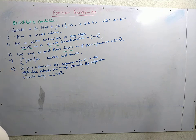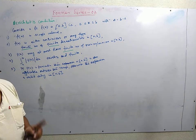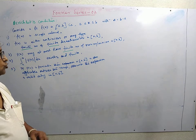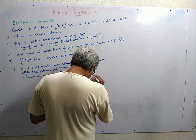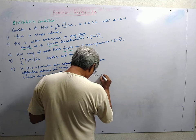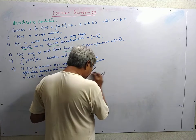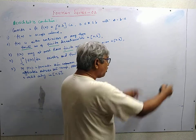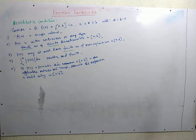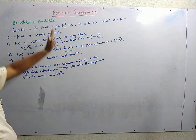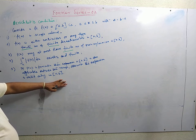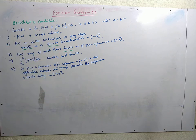Strictly speaking, periodicity is not included in Dirichlet's condition. The point is that if we have a periodic function and expand it in the interval a to b, then it can also be applied to a+b to 2b — we can go on repeating it from one interval to another. But if the function is not periodic, the expansion made in a to b is valid only in this region, not outside. That is all about Dirichlet's condition.